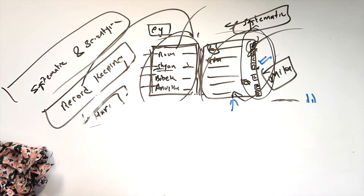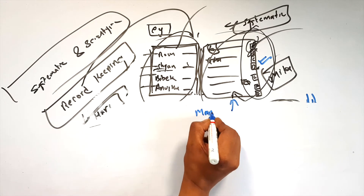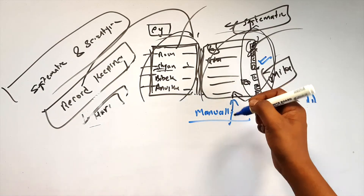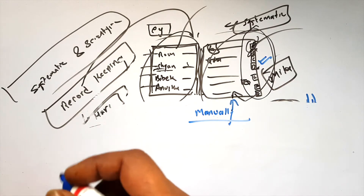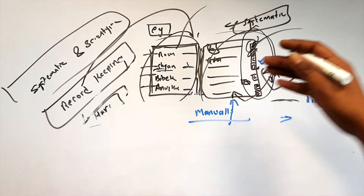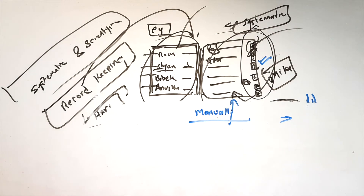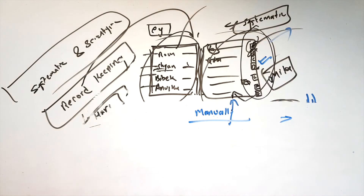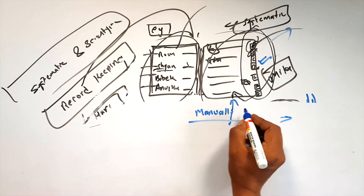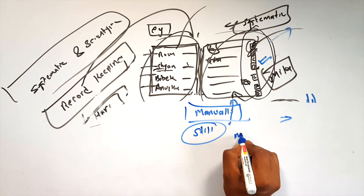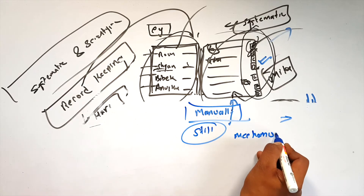So what do you do with record keeping? You can do it manually. That is a modified version. The record keeping is systematic and scientific, but the whole process and mechanism can still be very slow.